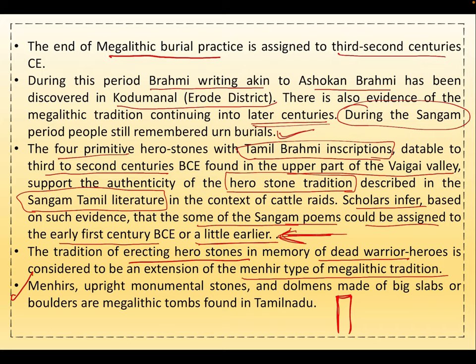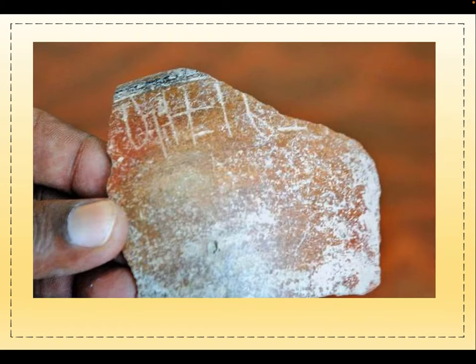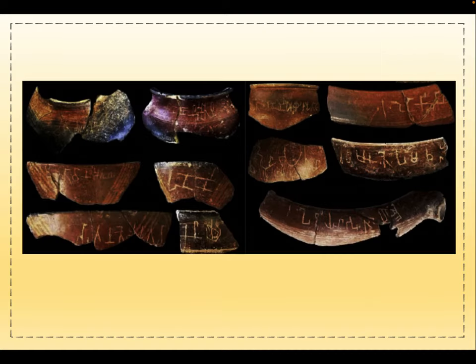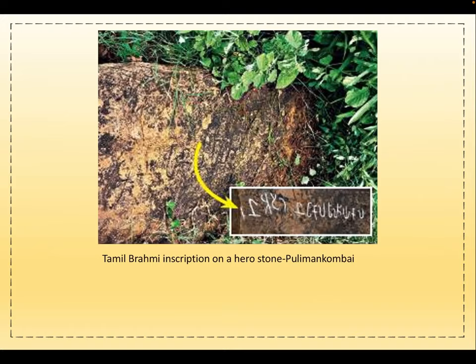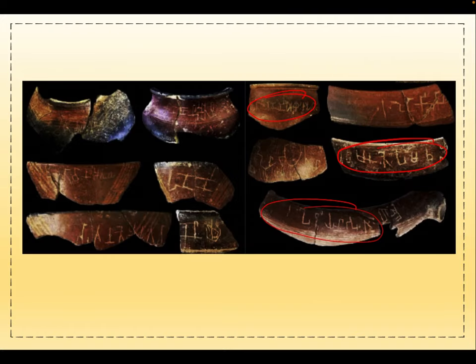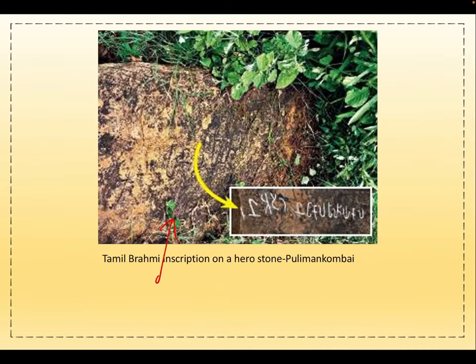Menhirs are upright monumental stones, and dolmens made of big slabs or boulders are megalithic tombs found in Tamil Nadu. Brahmi script inscriptions were found on pottery pieces excavated in Tamil Nadu. A hero stone was also erected at Pulimankombai, with Brahmi script inscribed on it.